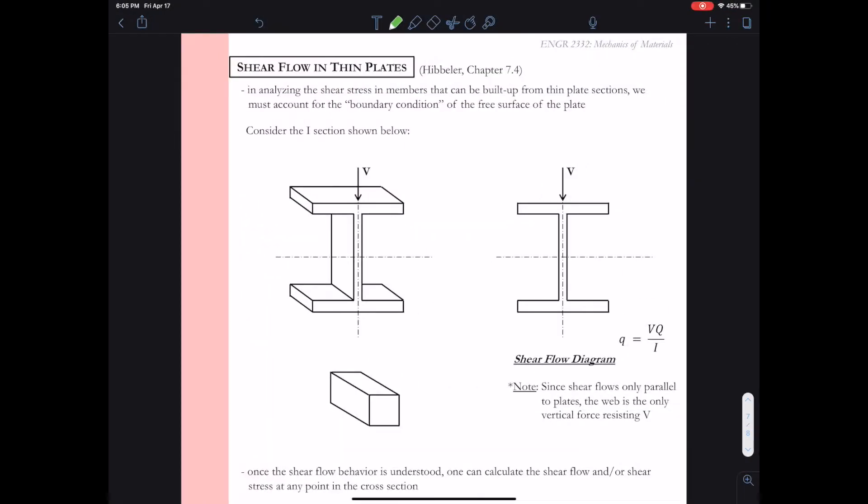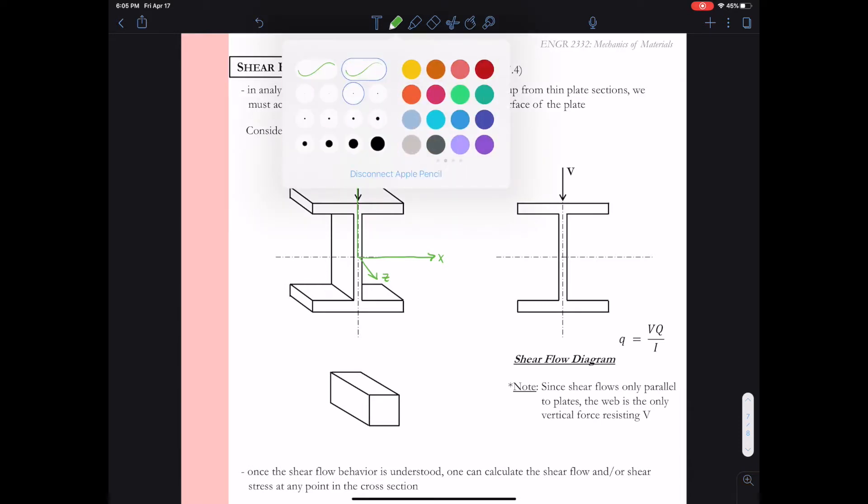Alright my engineering superheroes, let's take a look at shear flow in thin plate cross sections. So I want to consider this I section here. I have a vertical shear force V applied to the cross section in the negative y axis. I'm going to give myself x, y, and z axis here so I have some reference point for description of our shear stresses.